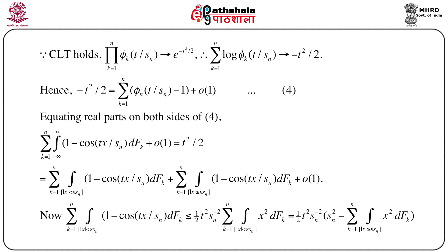Since the CLT holds, Π_{k=1}^{n} φ_k(t/s_n) → e^{-t²/2}. Taking log on both sides, Σ_{k=1}^{n} log φ_k(t/s_n) → -t²/2. So it is immediate that -t²/2 = Σ_{k=1}^{n} (φ_k(t/s_n) - 1) + o(1). Let us call this equation 4.